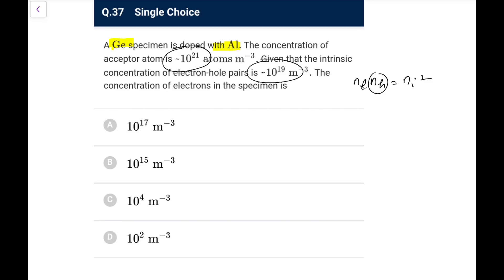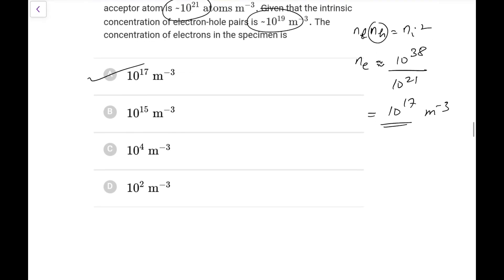So because it is doped, N_h will almost be 10 to the power 21. So N_e I can directly approximate as N_i square, that is 10 to the power 38 divided by N_h, that is 10 to the power 21. And of acceptor 1, this comes out as 10 to the power 17 per meter cube. Go for option A here. Because here, if you take 10 to the power 21 is much much greater than 10 to the power 17, so that additional one need not to be catered here.